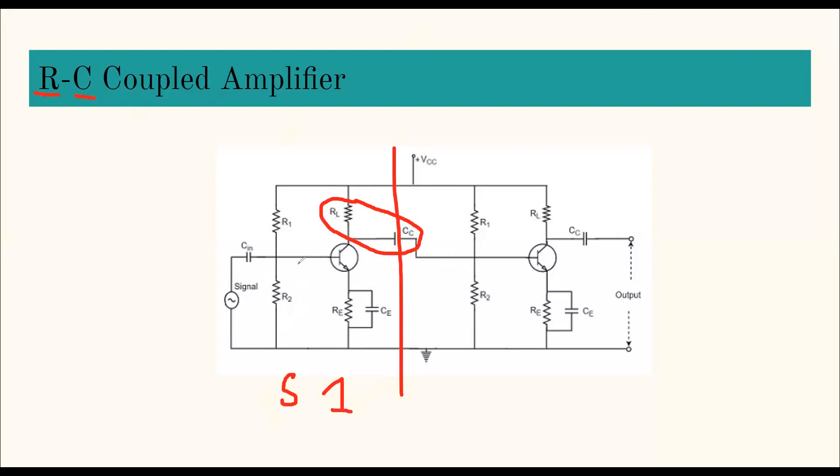This is the single stage, this is a single common emitter amplifier. This is the same replica, stage number two. Where is the input of the first stage? This is the input of stage one, and at the collector this is the output of stage one. Output of stage one is connected through the capacitor Cc and RL to the base of the second stage, and we get the final output at this collector. Hence it is coupled through resistance and capacitor, hence it is RC coupled amplifier.